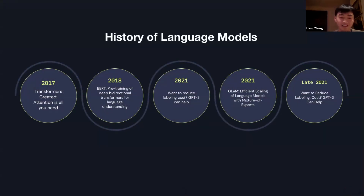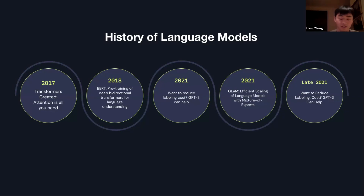Large language models like BERT, SetFit, and Claude are essentially transformers that are pre-trained on various datasets like math, history, etc. Because of being pre-trained on various datasets, they tend to hallucinate when they encounter new, unseen data.